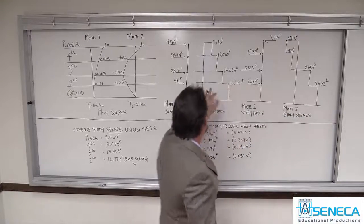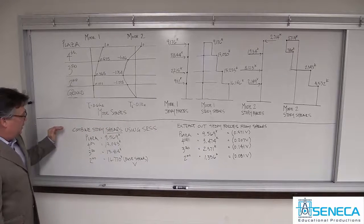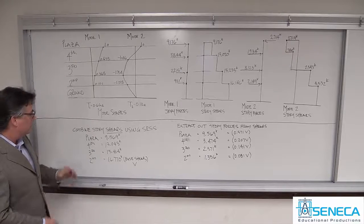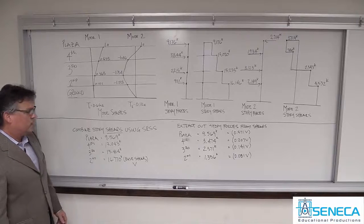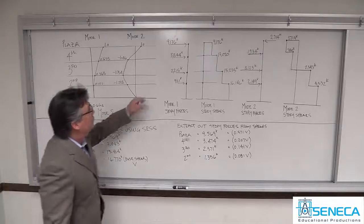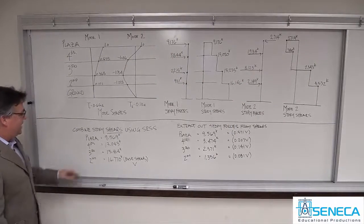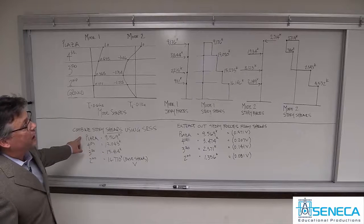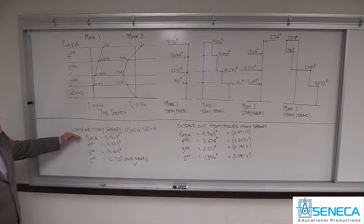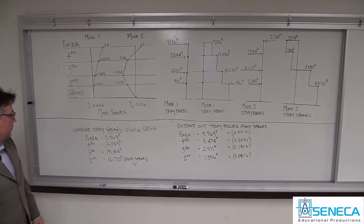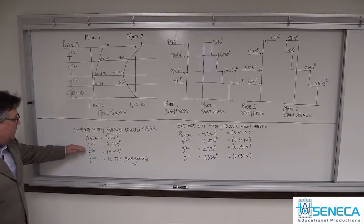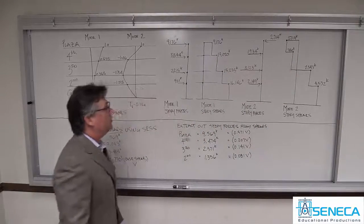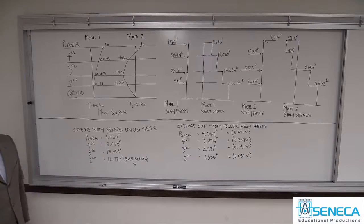With these two sets of story shears, we combine them. You can combine them using the square root of the sum of the squares, or decide on a more sophisticated method — that's a designer's choice. If I take the SRSS of the story shears: at the roof, I square 9,176 kips, add that to the square of 2,714, and take the square root. That's the maximum shear analytically from a statistics perspective that I can anticipate. I continue down the building — at the fourth level, 13,020 squared plus 780 squared, take the square root — and so on until I get the maximum realistic base shear combining the modes.